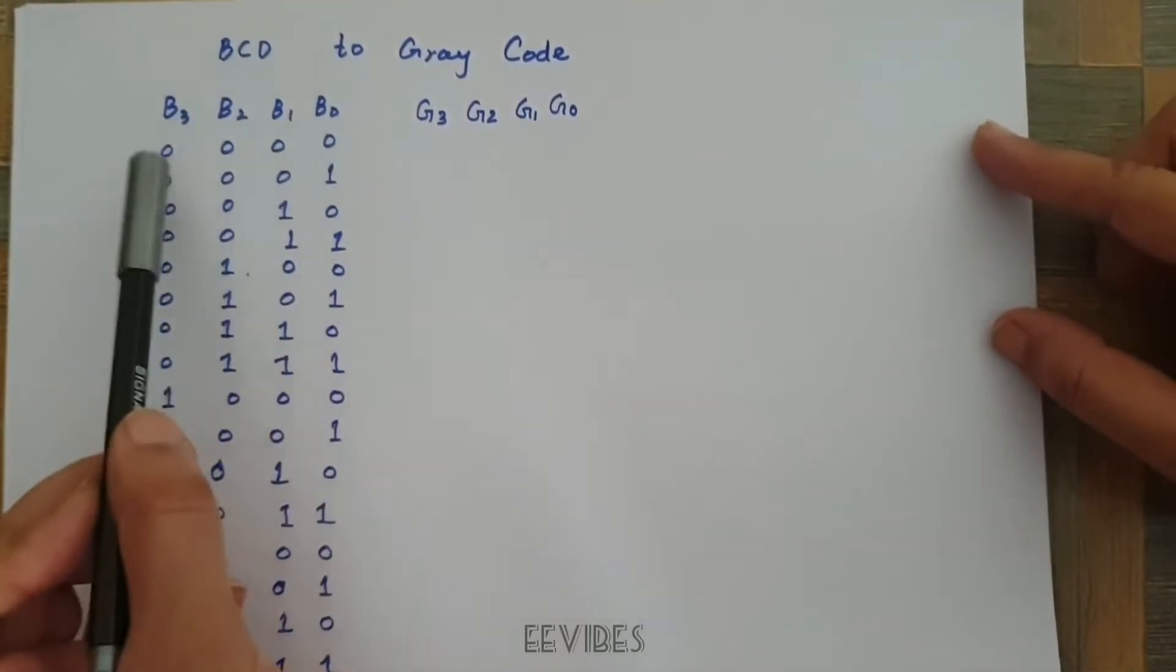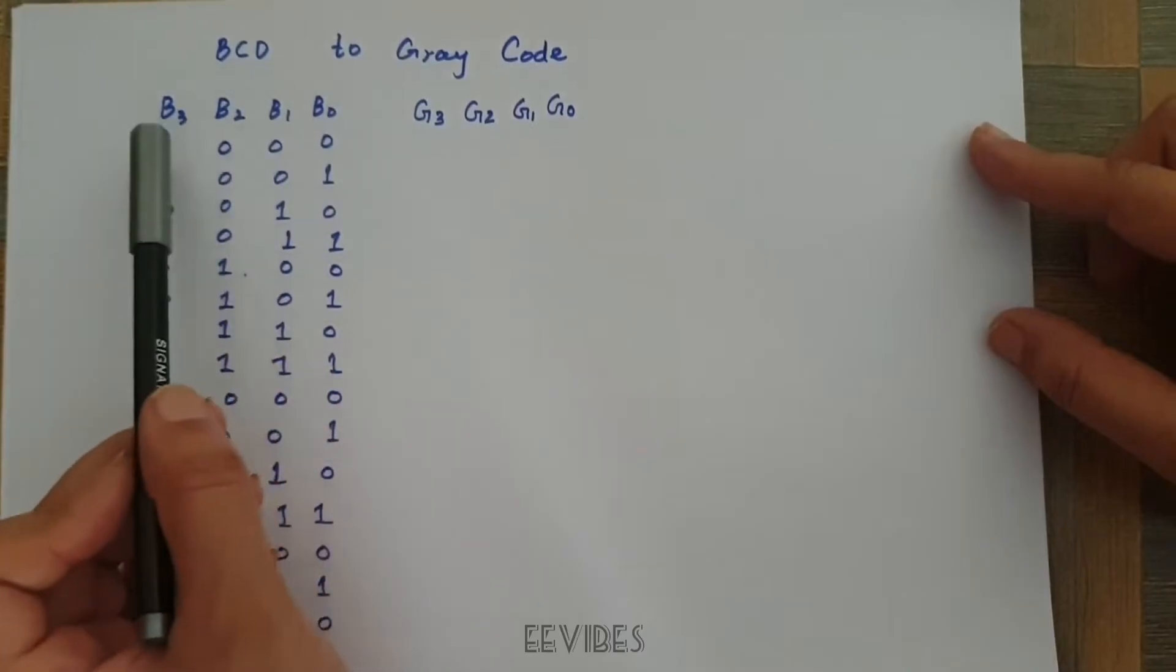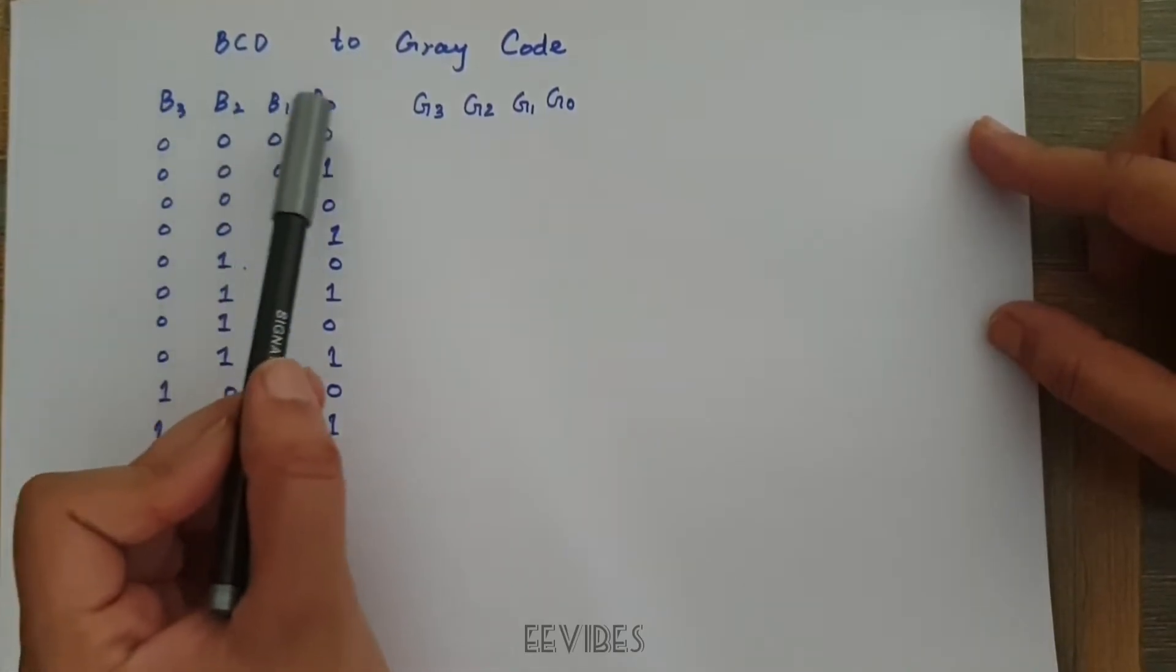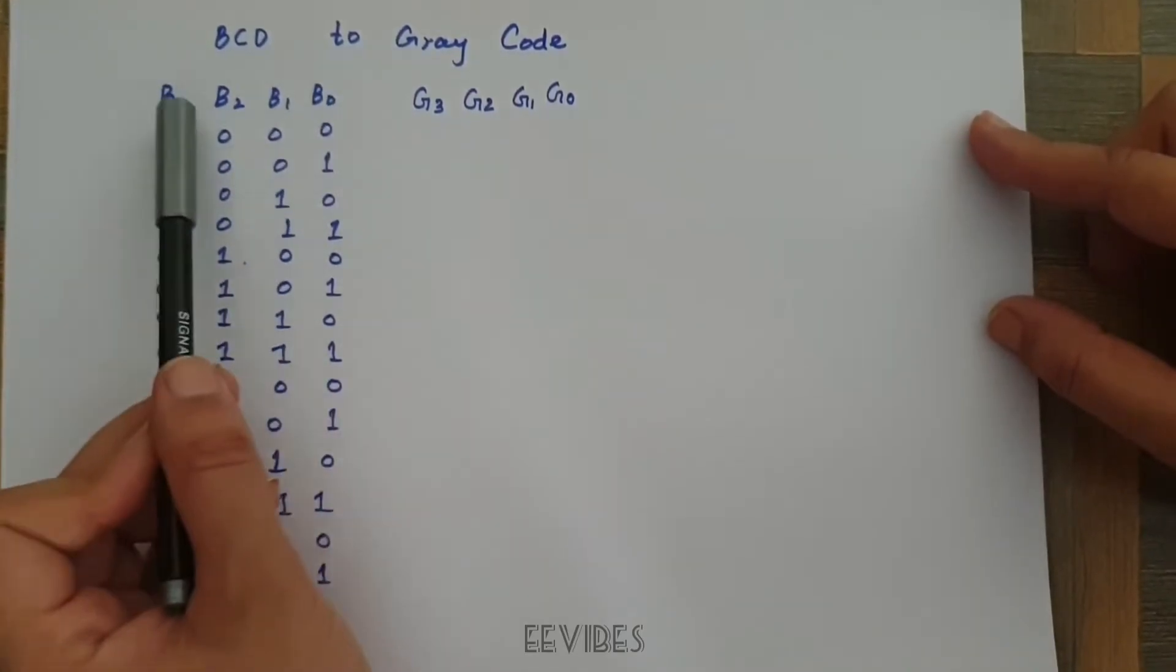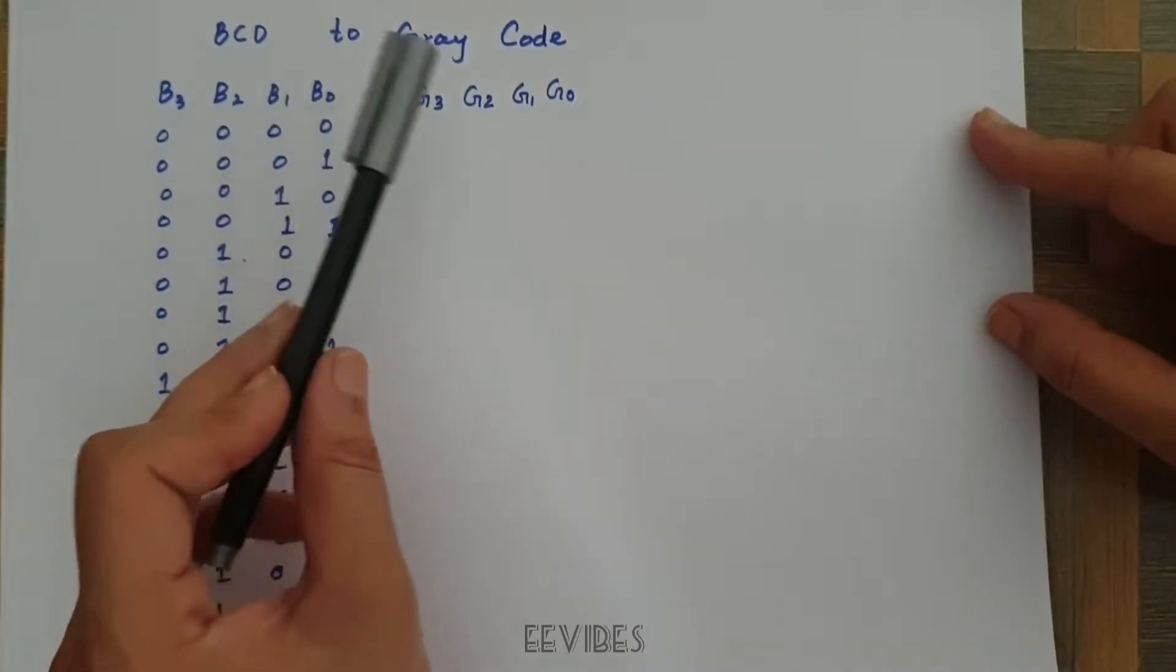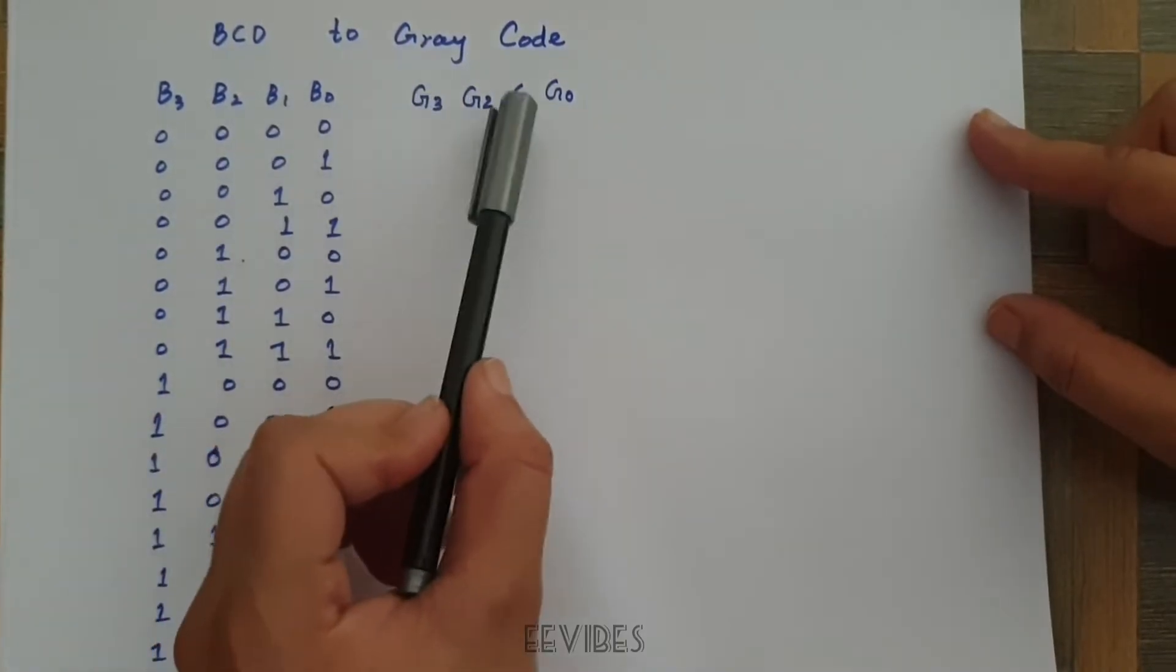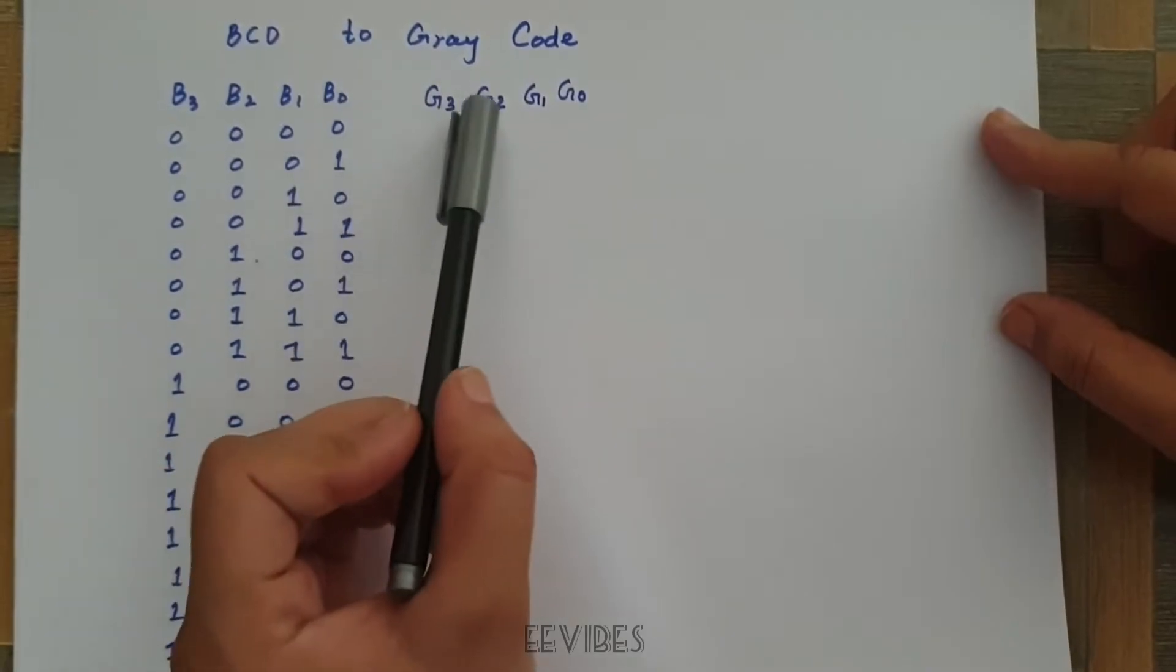We know that BCD is a 4-bit code and that's why I have represented its bits as B3, B2, B1 and B0. Corresponding to this, there must be existing a 4-bit Gray code.